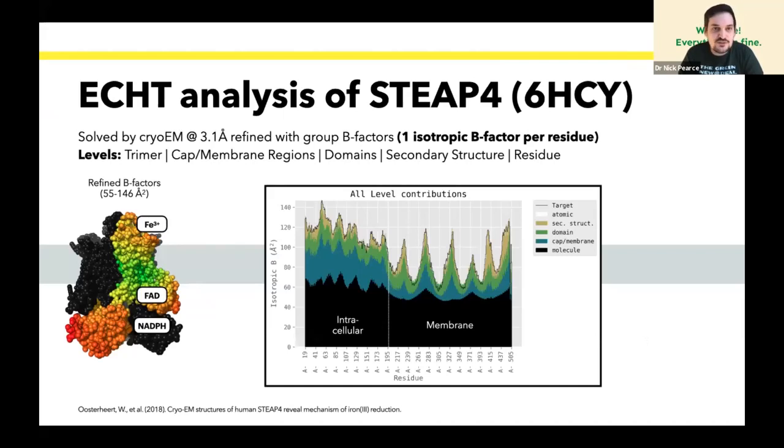This structure, once you run it, you can decompose the disorder into separate components. You pick up a quite large 50 to 60 angstrom squared disorder component for the whole molecule. It is a domain swap trimer, so I defined another level called cap or membrane, where we have one group for the membrane components of the trimer and one group for the three intracellular domains. Then at the next level domain, we have one group for each intracellular domain of the trimer and one for each membrane group of the trimer.